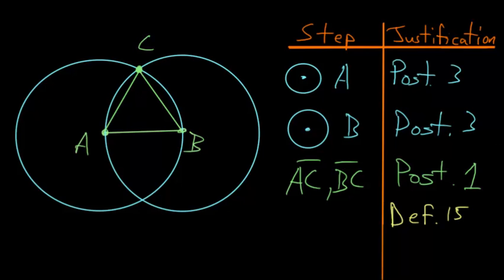And from this definition, we can notice that lines AC and AB are both radii of the circle with center A. So AC is equal to AB.